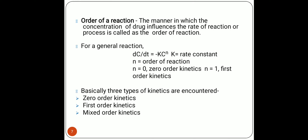Next we will discuss the order of reaction. This is the reaction in which the concentration of drug influences the rate of a reaction or process. For a general reaction, dc/dt = −k·C^n, where k is the rate constant and n is the order of reaction. The order of reaction may be zero order kinetics or first order kinetics.